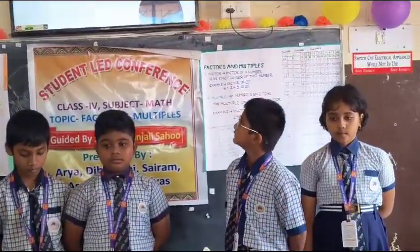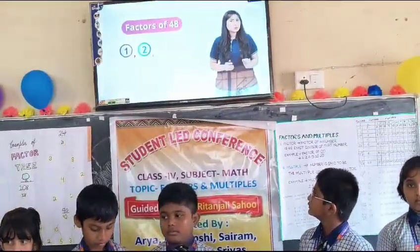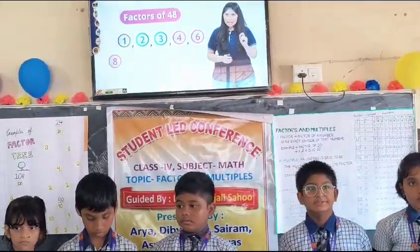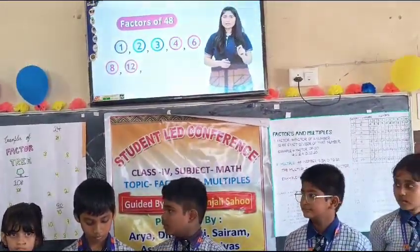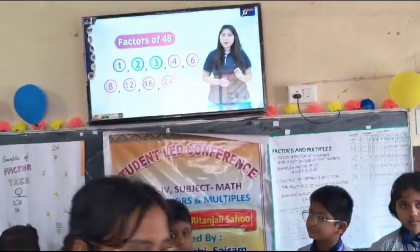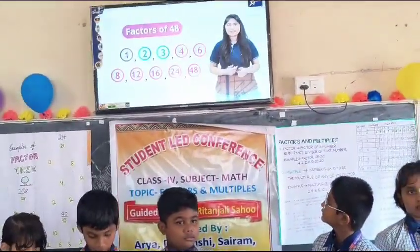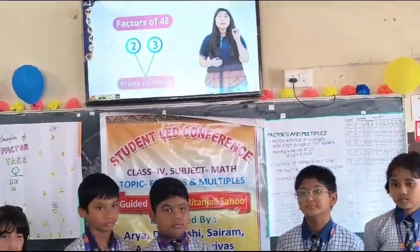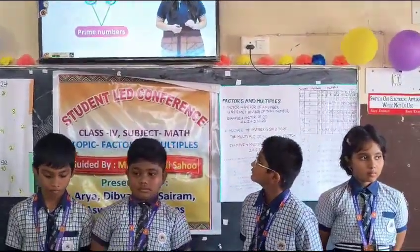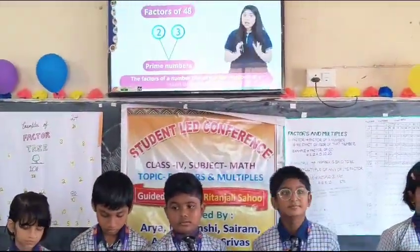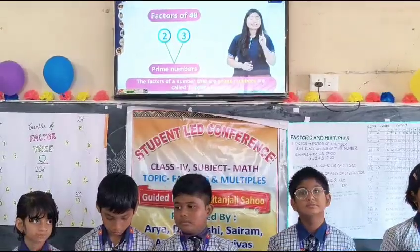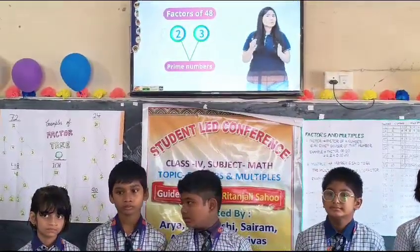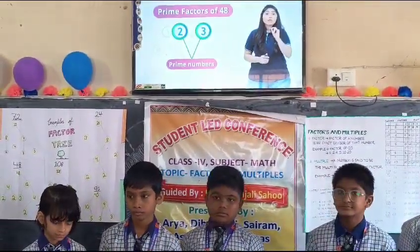The factors of 48 are 1, 2, 3, 4, 6, 12, 16, 24, and 48. Of these factors, 2 and 3 are prime numbers. The factors of a number that are prime numbers are called its prime factors. So 2 and 3 are the prime factors of 48.